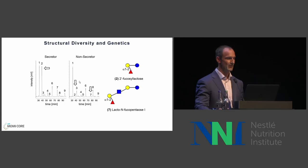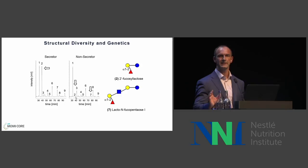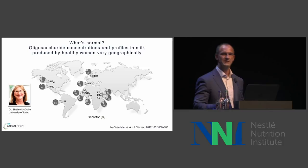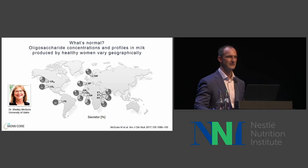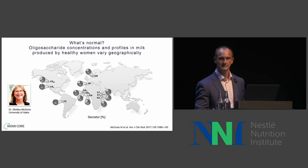Women that are secretors with an active FUT2 show peak number two — 2'-fucosyllactose — as the dominant peak. Non-secretor moms with an inactive FUT2 have no 2'-fucosyllactose at all: it's all or nothing. The same applies for LNFP1 and other oligosaccharides. Together with Shelley McGuire we've seen that the secretor rate changes depending on where you are on the planet. In Latin America almost all moms are secretors — only 1 or 2% are non-secretors. That is very different on the African continent, where 25, 35, almost 40% of moms are non-secretors, and we still haven't fully figured out why.